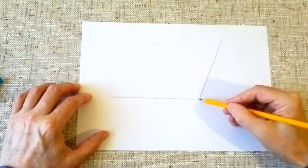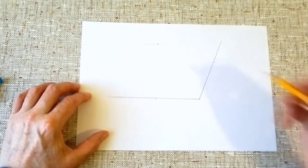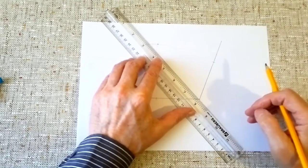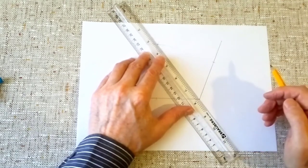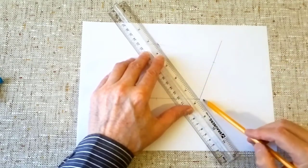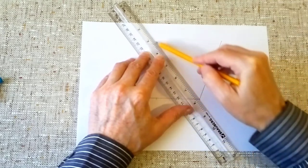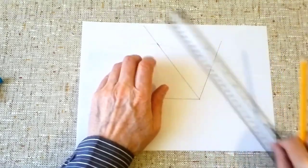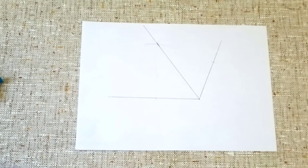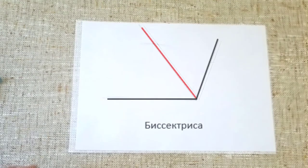Теперь нам надо соединить эту точку с основанием угла. Берём линейку и соединяем две найденные нами точки. Вот эта линия, которую мы сейчас провели, является бисектрисой. Эта бисектриса является очень важной линией, потому что по ней мы будем делать линию гиба. Это первый способ, как найти бисектрису.